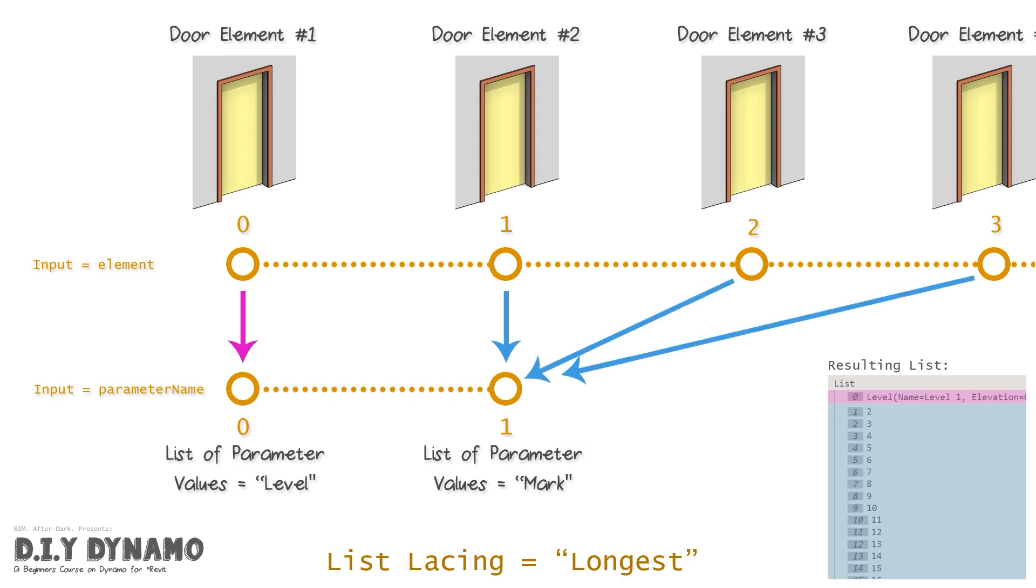So we move on to the longest lacing. It's going to do the same thing, except when it continues throughout the numbers, it's going to use the last value for the parameter mark. So for example, door number one, you could see we're given the level, which is notated as pink on the right hand side. So that's level one, but then door number two through 18, we're actually given the mark value. So that could be useful, but maybe not. But basically, it's replacing the first value in your list with the first input parameter name.